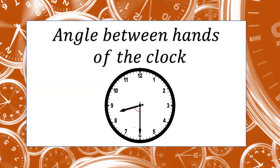For example, this time is 8:30. So what will be the angle at this particular time? And if we know the angle, what will be the time? There are two types of questions possible. Number one: time is given and we have to find out the angle. And angle is given and we have to find out the time. Let us try to find out the angle between the two hands of the clock.